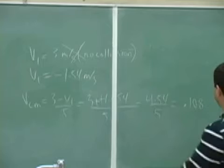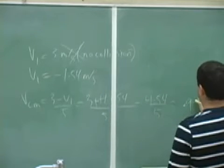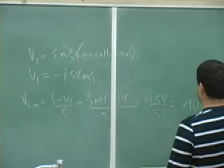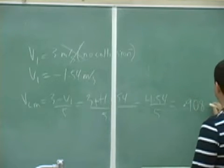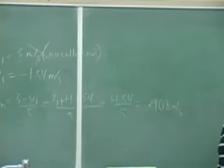I got nine. No, wait, I did that wrong. I did that wrong. 0.908. And that's meters per second. So v center of mass is 0.908 meters per second.